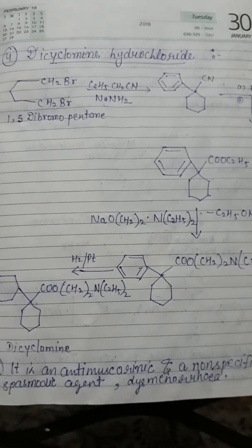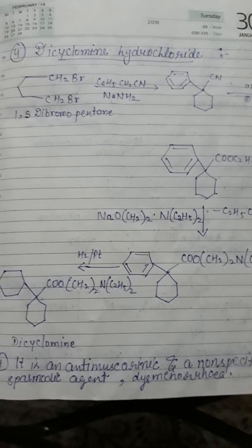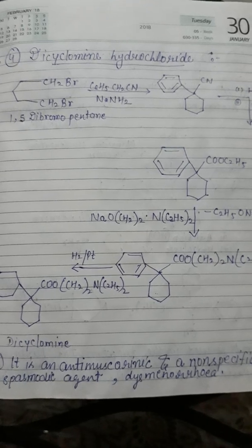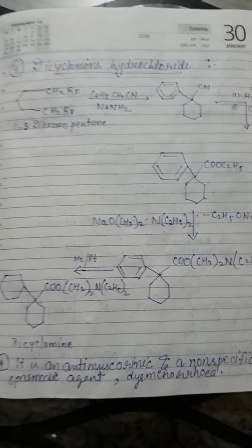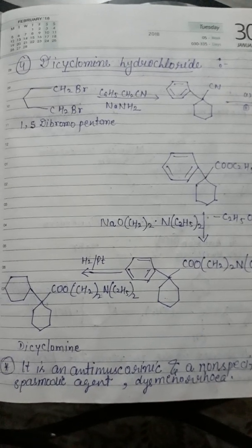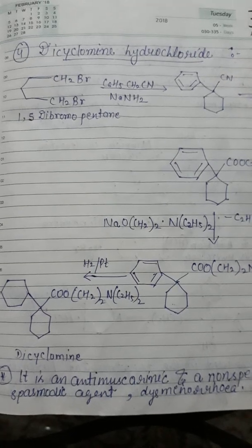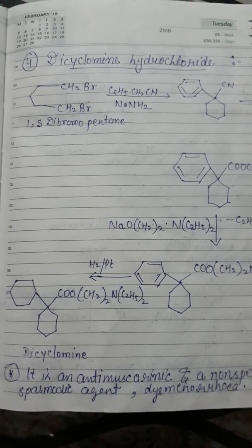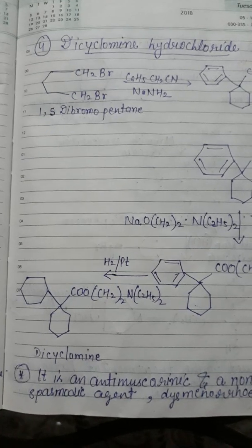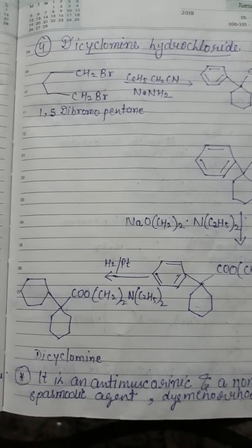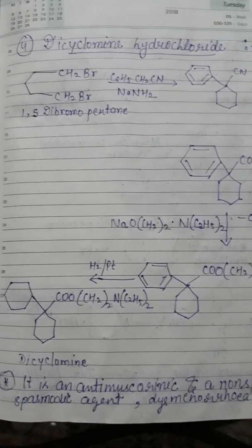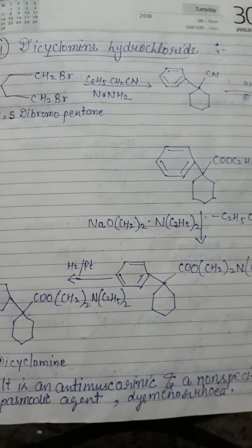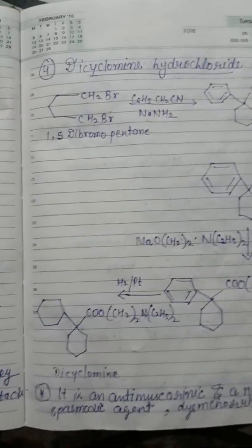Dicyclomine minimized the adverse effects associated with atropine-type compounds. It has a spasmolytic effect on various smooth muscle spasms, particularly those associated with the gastrointestinal tract. It is also used in dysmenorrhea, pylorospasm, and biliary dysfunction. The dose of this drug is 10 to 20 mg per day in 4 divided doses, administered orally or intramuscularly.